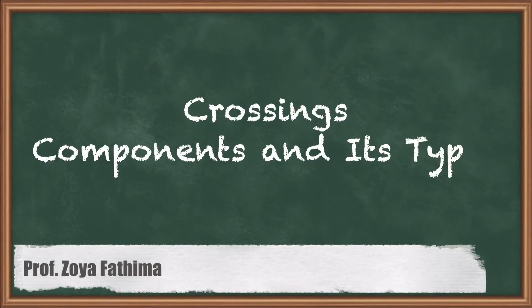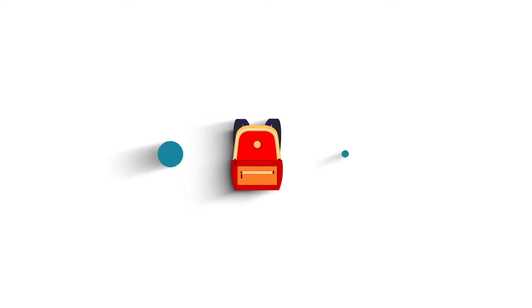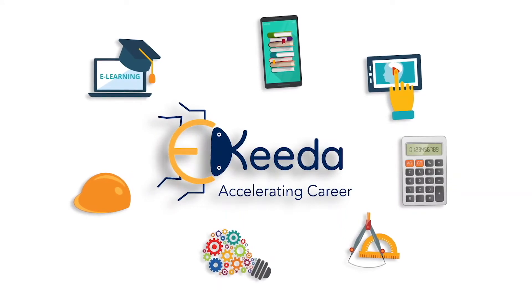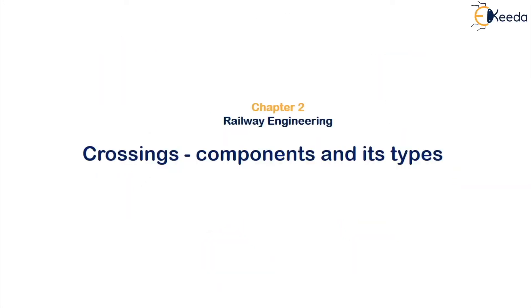Hello students. In this lesson, let us study about the crossings, its components and its types. We'll see what exactly is a crossing, what are the requirements of crossing, and we'll see all the component parts and study the types. There are totally three types of crossing, so in detail we'll study each of them.